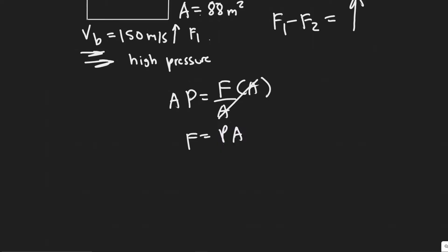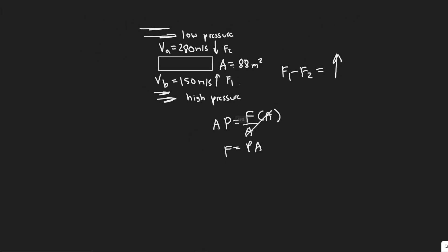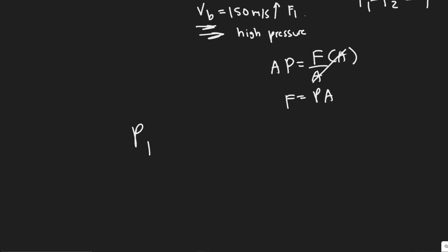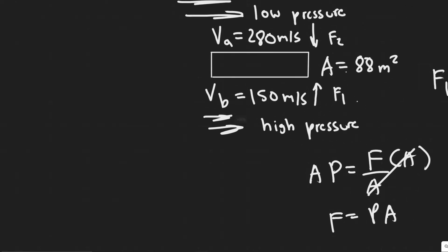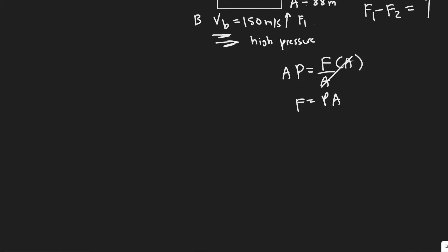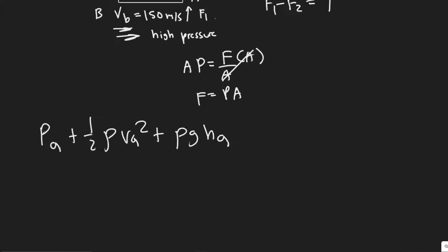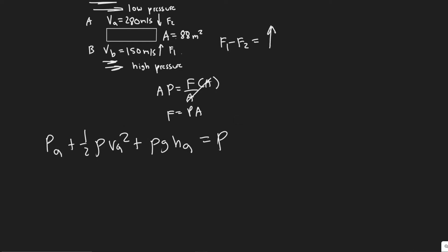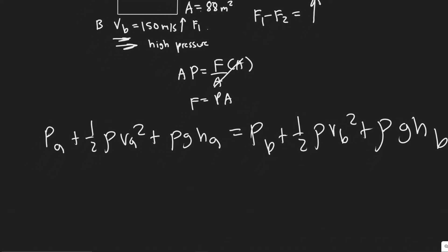We know force equals pressure times area, and we're going to use Bernoulli's equation to solve for this. I'll call the top surface point A and the bottom surface point B. Bernoulli's equation relates the pressure at both points: PA plus one-half rho VA squared plus rho g hA equals PB plus one-half rho VB squared plus rho g hB. This relates pressure at both points based on conservation of energy, with kinetic and potential terms.